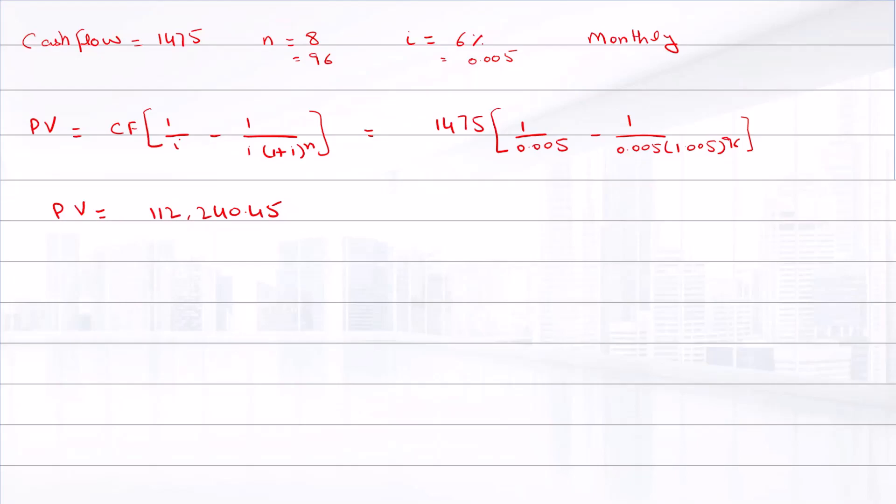Now we discount this lump sum to today. The present value equals future value divided by (1 plus i) raised to power n. We discount $112,240.45 by dividing by 1.005 raised to power 84, which equals $73,824.45. This is the present value of the annuity received from years 7 to 15.